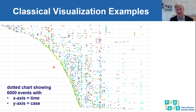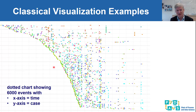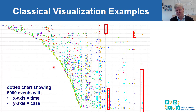Another visualization we have seen before is the dotted chart. Every dot corresponds to an event. The event has a case identifier on the vertical dimension, a timestamp on the horizontal dimension, and an activity indicated by color. We have a table of 6,000 rows where every row has three values: Case ID, timestamp, and activity. Here we visualize these 6,000 events, and we can see much more than by just looking at tabular data — for example, batching where the same activity happens for multiple cases on the same day.